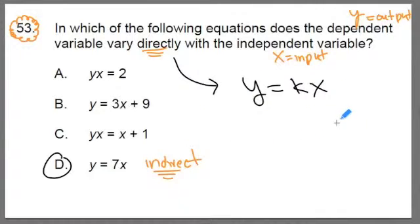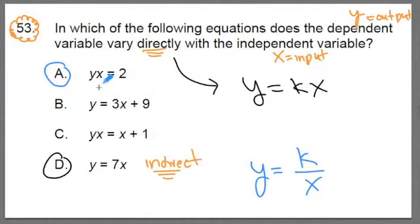Now, if the question was which one of these shows an equation where the two variables vary indirectly, then we'd be looking for this structure here. Now, just looking through these, do you see the equation that shows an indirect relationship? Well, if you look closely at a and you isolate the y by dividing both sides by x, what you come up with is y is equal to 2 over x.